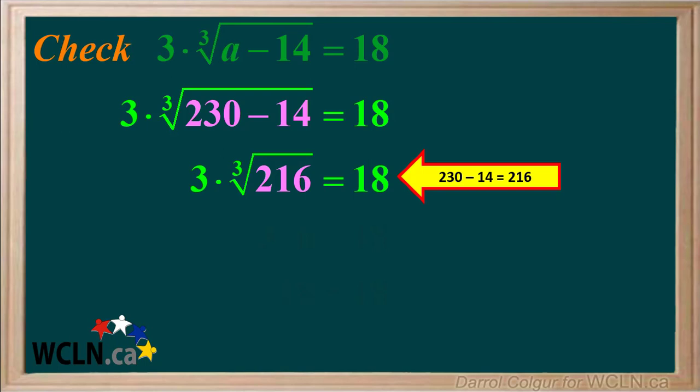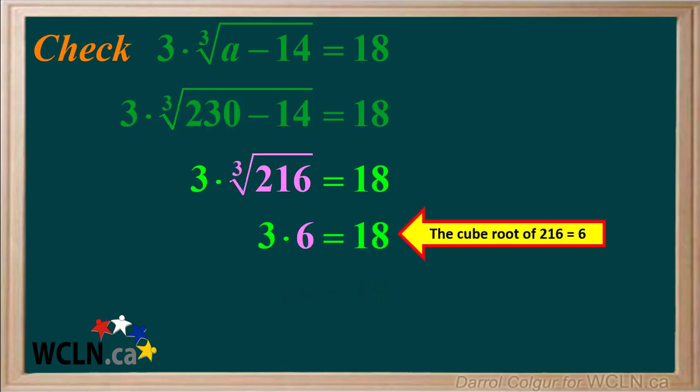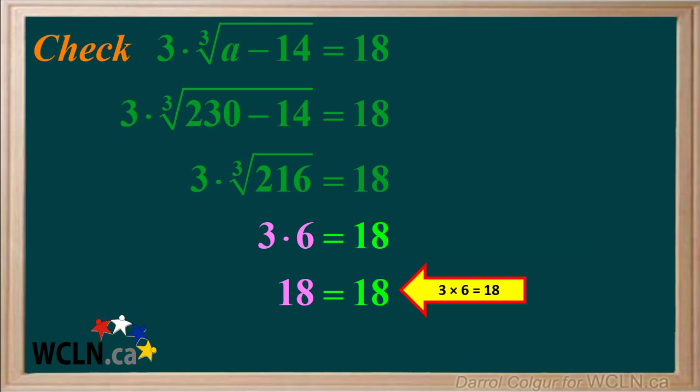So we have 216 inside the cube root radical. At this point we'll just take the cube root of 216. We recognize 216 as a perfect cube. The cube root of 216 is just 6. In the last step, we'll multiply 3 times 6. 3 times 6 is equal to 18.